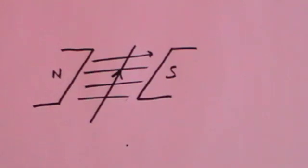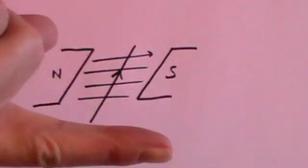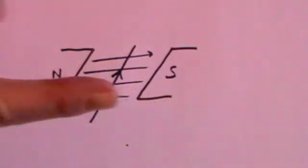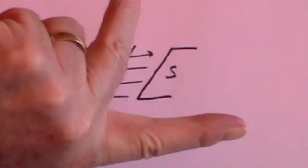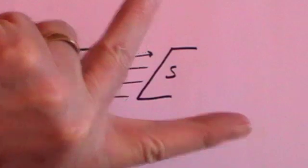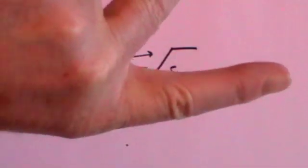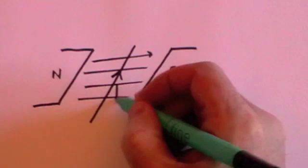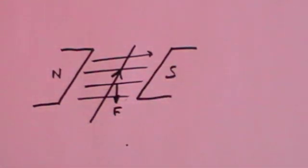You take your left hand, point the first finger in the direction of the field from north to south, your second finger pointing in the direction of the current going up, and then you look and see which direction your thumb is pointing — it's pointing downwards. So the force on the wire will be down. That's what we learnt last time.